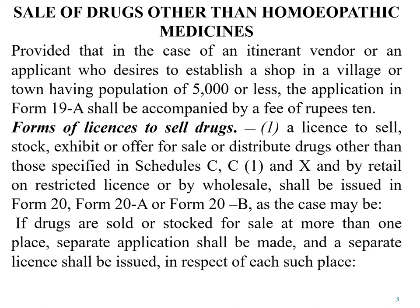In case of drugs included in Schedule X, the application shall be made in Form 19A with a fee of Rs. 500. However, in case of a vendor who desires to establish a shop in a village or a town having a population of 5000 or less, the application in Form 19A shall be accompanied by a fee of only Rs. 10. This reduced fee is to motivate pharmacies to set up at remote locations throughout the country.